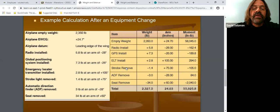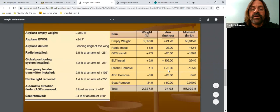And then here, the strobe said they removed it. So if I remove the strobe down here, it was 1.4 pounds. So make sure you put in a negative 1.4, and then the station number, whatever it is, and then do the multiplication.